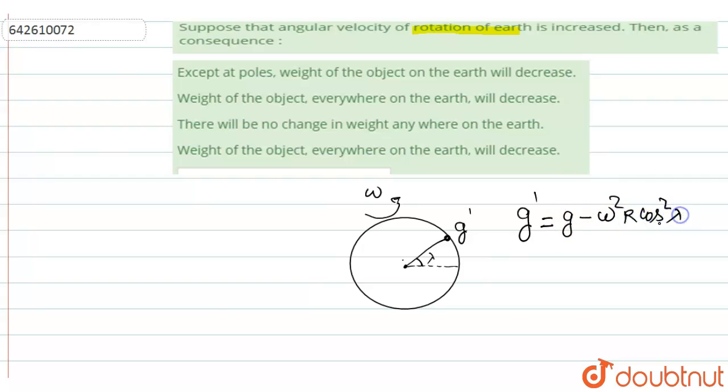We know this relation between g and g dash. G dash is the acceleration due to gravity at this point P. G is the actual value, omega is rotation, r is radius, lambda is latitude. Now the question says that the angular velocity of rotation of the earth is increased. It means omega is increasing. Omega increasing means the minus value is increasing, so g dash is going to decrease.